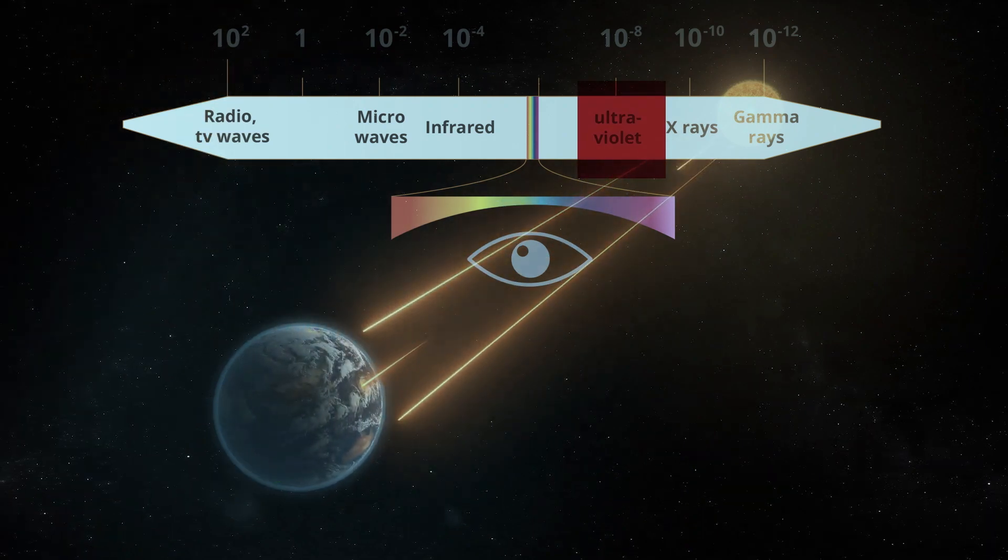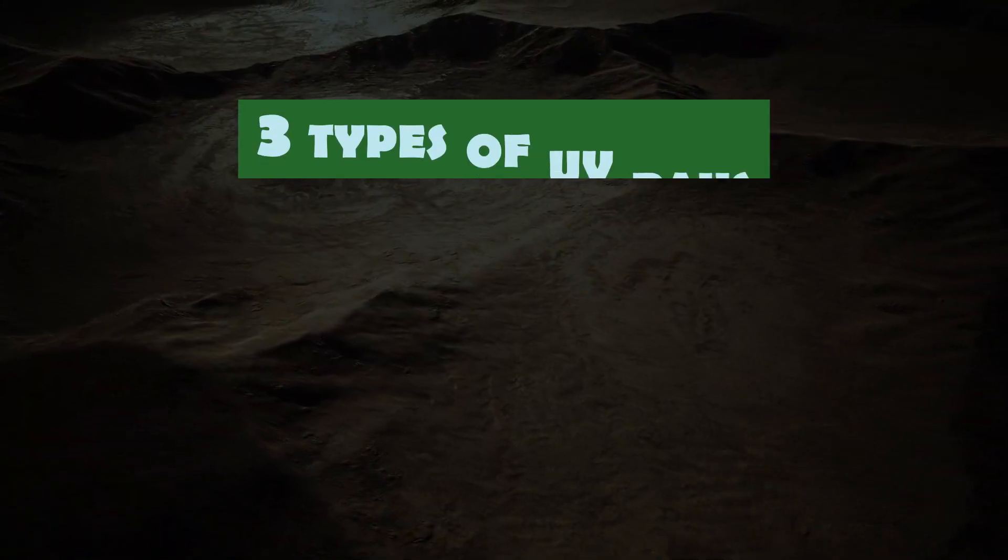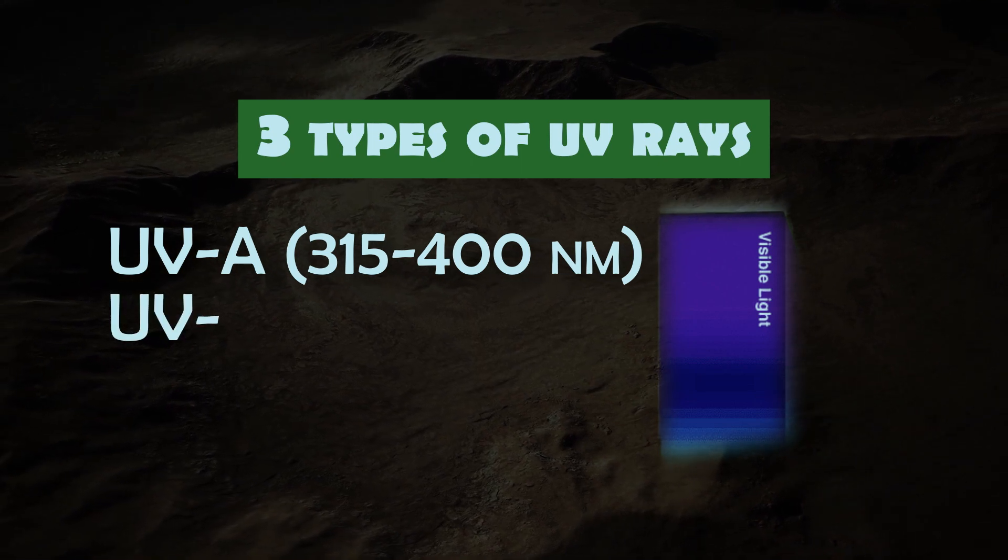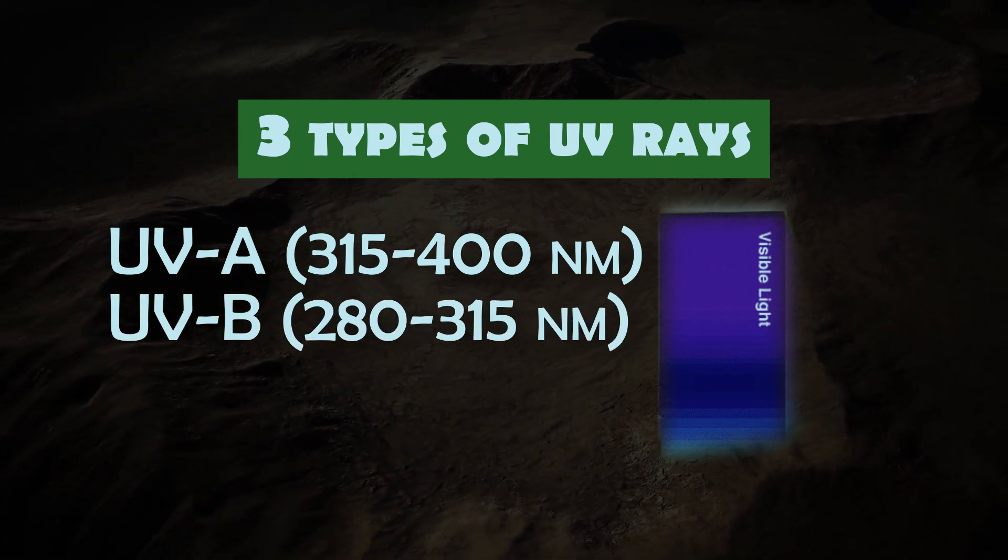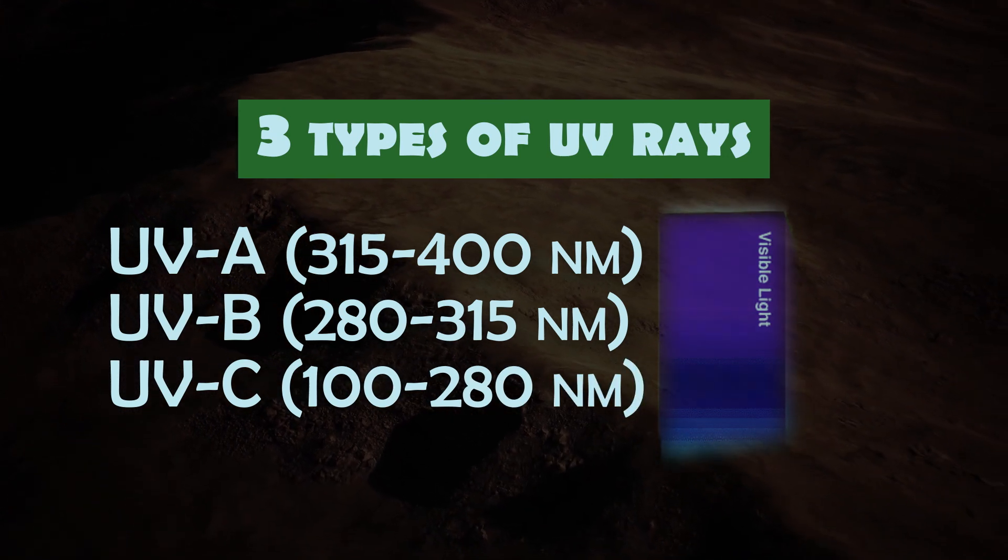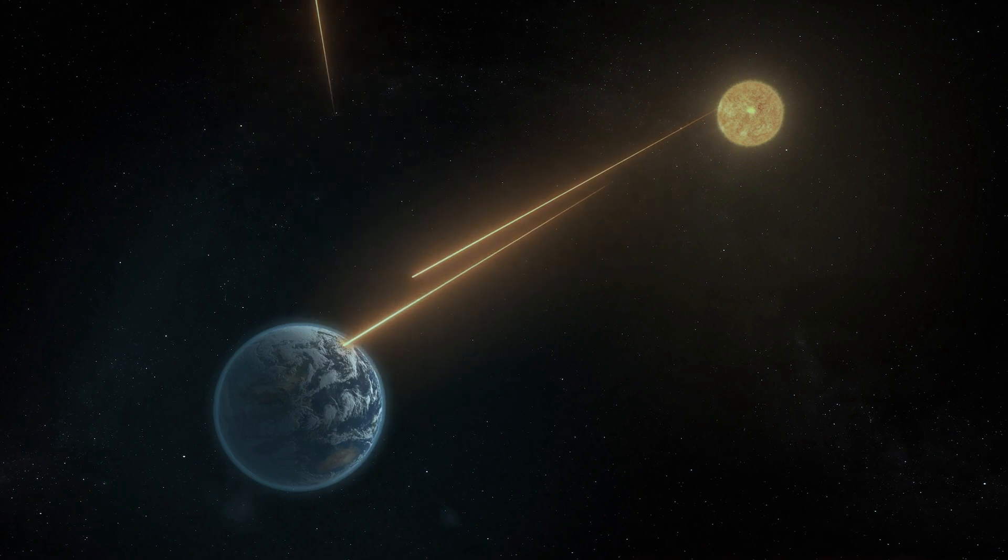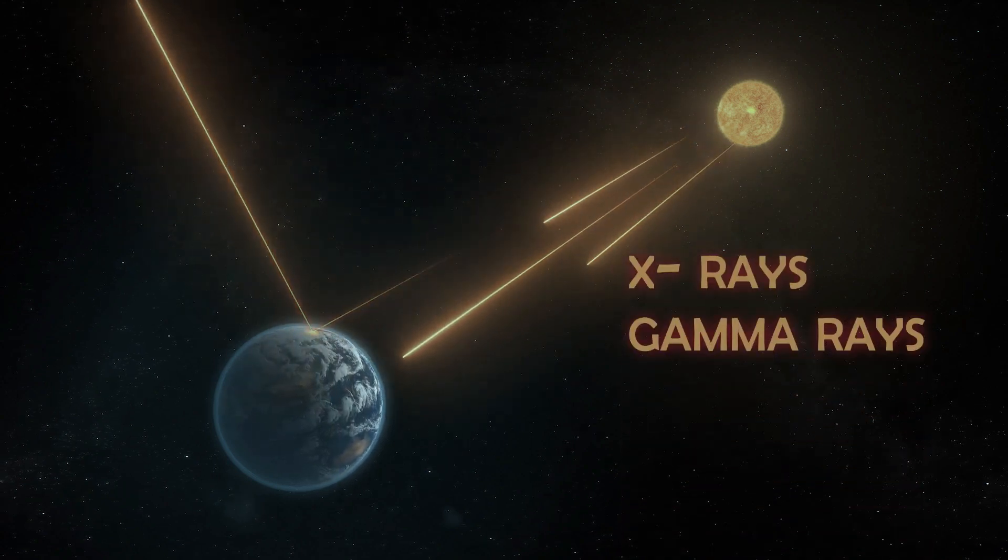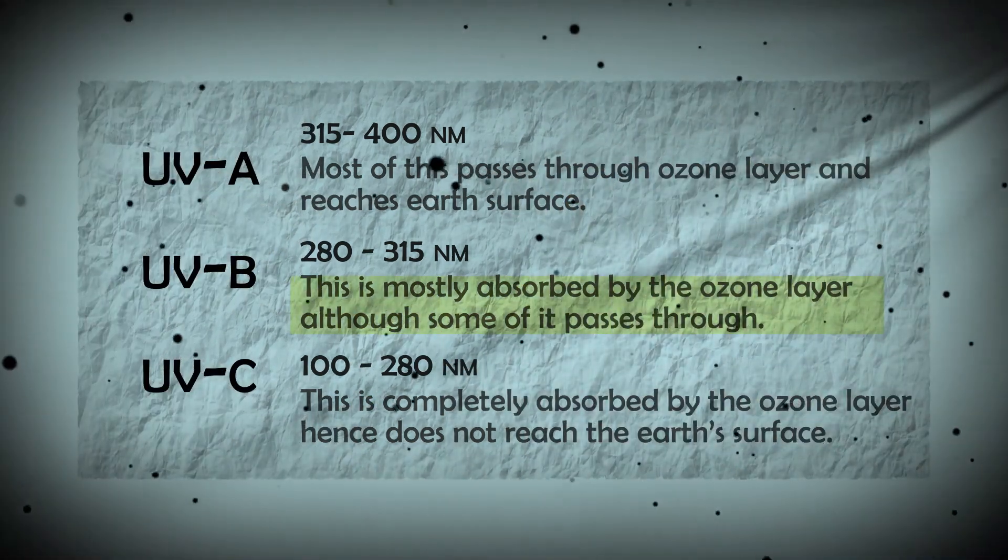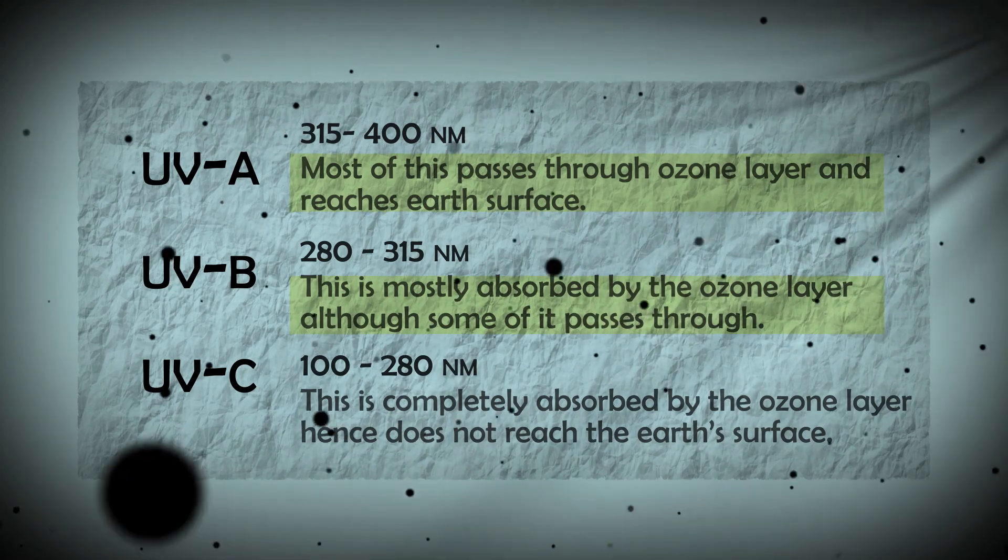UV rays can be classified into three types based on their wavelengths: UVA 315-400 nanometers, UVB 280-315 nanometers, and UVC 100-280 nanometers. Of these, UVC is the most potent and dangerous. Thankfully, our ozone layer intercepts and neutralizes x-rays, gamma rays, and the menacing UVC rays. However, it only partially absorbs UVB radiation and does not filter out UVA at all. Hence, our reliance on sunscreens.